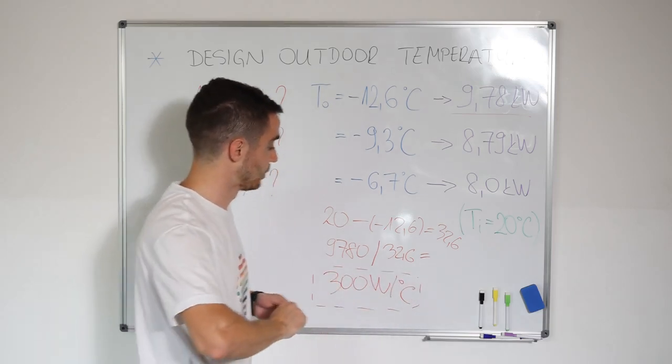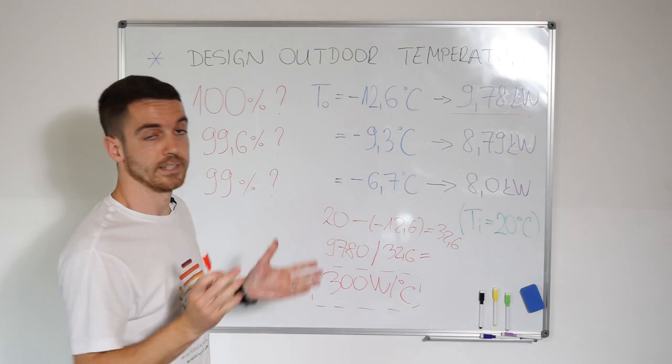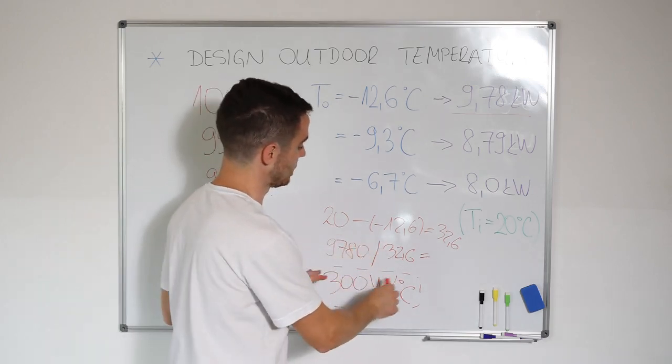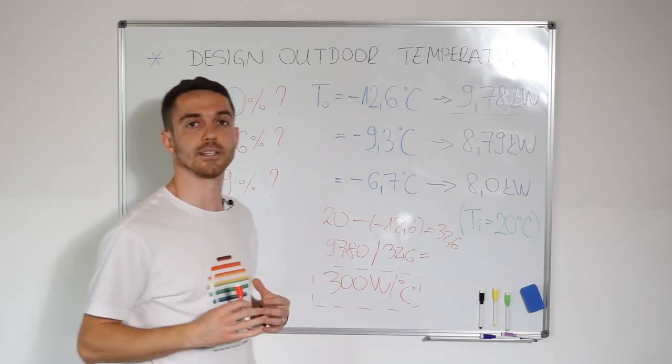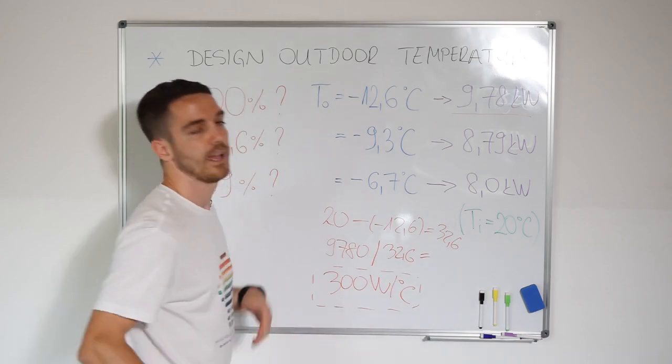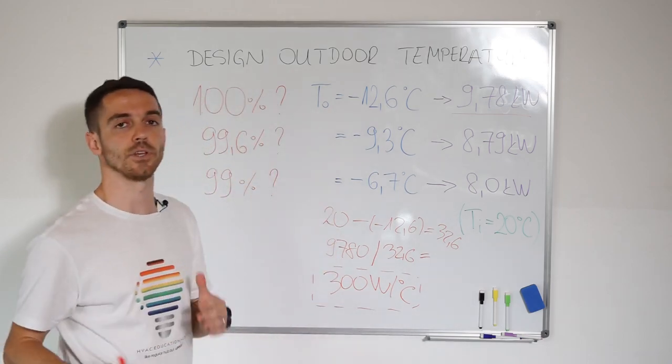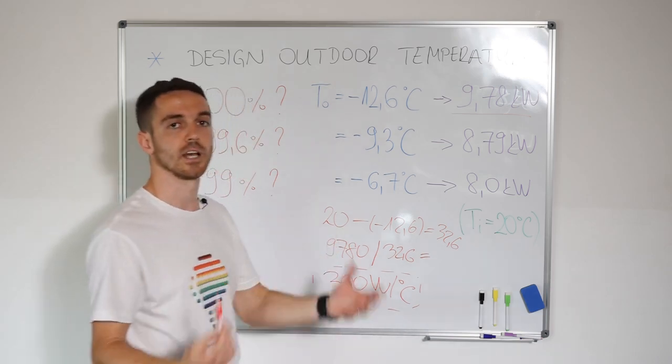What does this mean? It means that at outdoor temperature 20 degrees, indoor 20, we have zero. We don't have heat loss. If indoor is 20, outdoor is 19, we have 300 watts. And for each degree Celsius of difference, we have 300 watts additional.